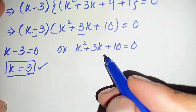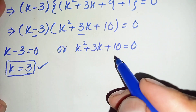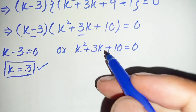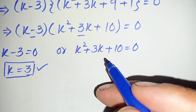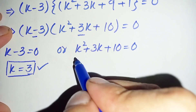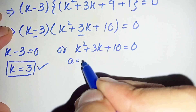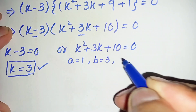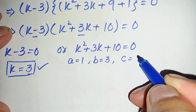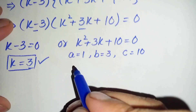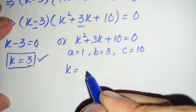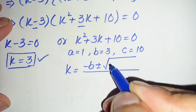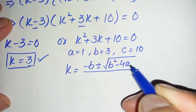Now we solve the quadratic equation. The solution may be real or imaginary. We cannot solve it by factorization, so we use the quadratic formula. Here, a is the coefficient of k square, which is 1; b is the coefficient of k, which is 3; and c is the constant term, which is 10.